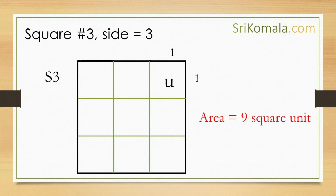Thirdly, let us see square number 3, whose sides are 3 unit length, as shown in the diagram. Then, as can be understood from the diagram, by counting the number of unit squares inside square number 3, therefore the area of square number 3 is 9 unit squares.